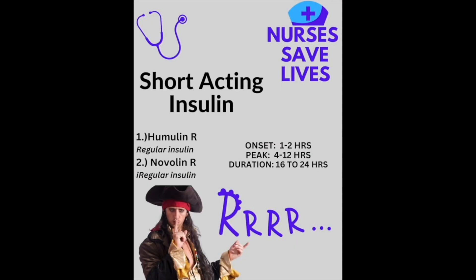Our two main short-acting insulins are Humulin R and Novolin R. Humulin R and Novolin R can also go by the name regular insulin. The onset is 1 to 2 hours, peak is 4 to 12 hours, and duration is 16 to 24 hours. The trick to remember short-acting insulin is the R's — Humulin R, Novolin R, and regular insulin.